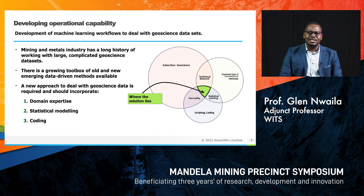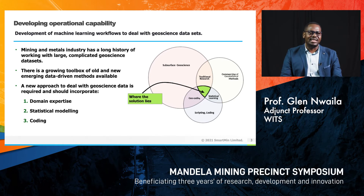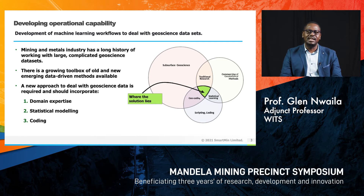We are now living in a world where we need a new way of doing things. The mining and metals industry has dealt with big data for a long time. Now there is a growing toolbox of new imaging and data-driven methodologies, and with this we need a new approach to deal with geoscience data. This approach needs to include three pillars: domain expertise — people fully trained as geophysicists and geologists; statistical modelling; and coding. The solution lies at the intersection of all three.